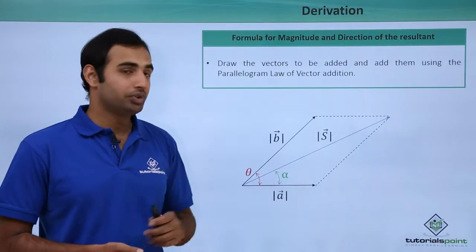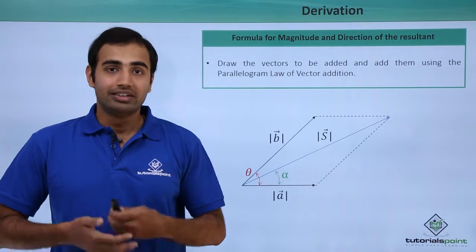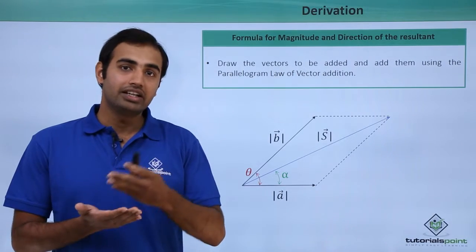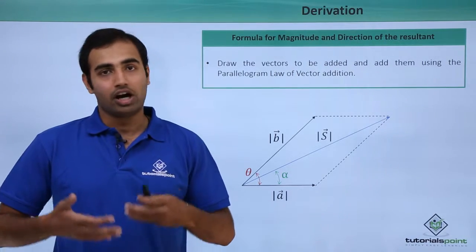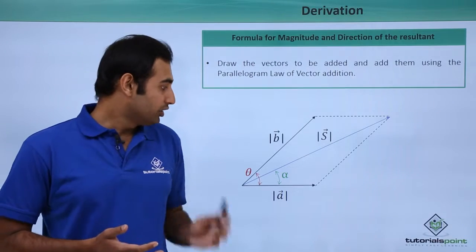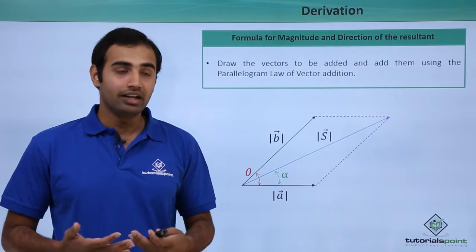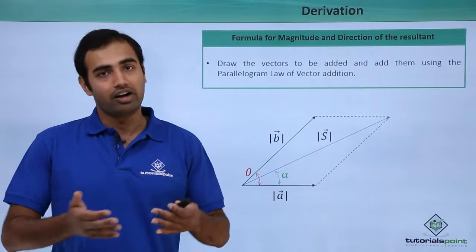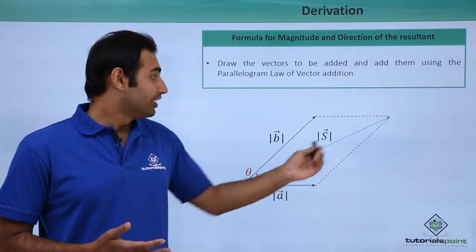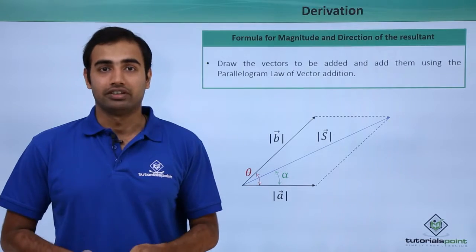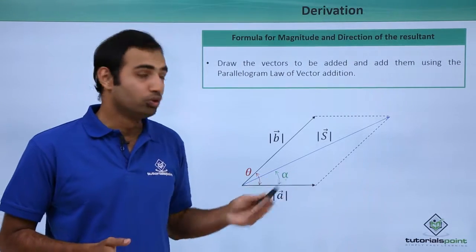Over here you can see angle alpha. This angle alpha gives an indication about the direction of the resultant vector. I already know the direction of vector a, and after calculations I will know the value of angle alpha. Once I do that, I can exactly describe the direction of the S vector as being angle alpha away from the known vector a.